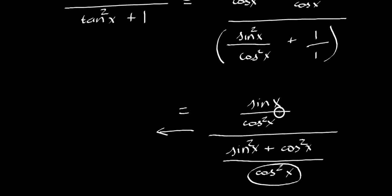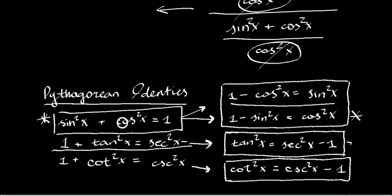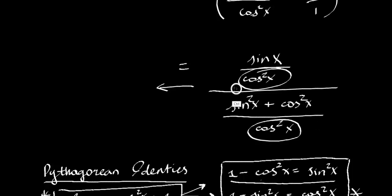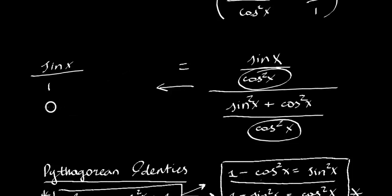We've got the same denominators, so we can cancel. And sin²x + cos²x — that equals one, our major Pythagorean identity. So this can be written as one. We'll be left with sine x. These two cancelled, and this is one, which is just sine x. And that's the correct answer.